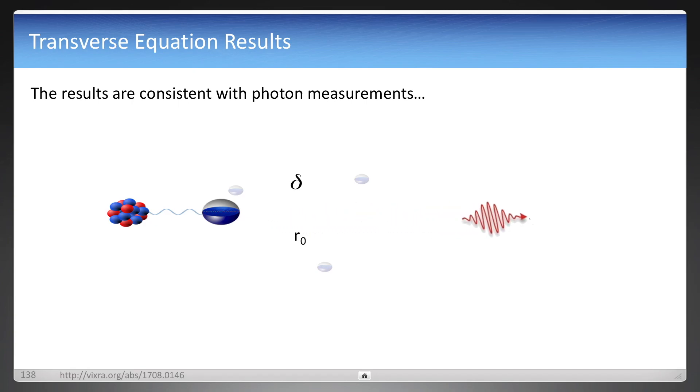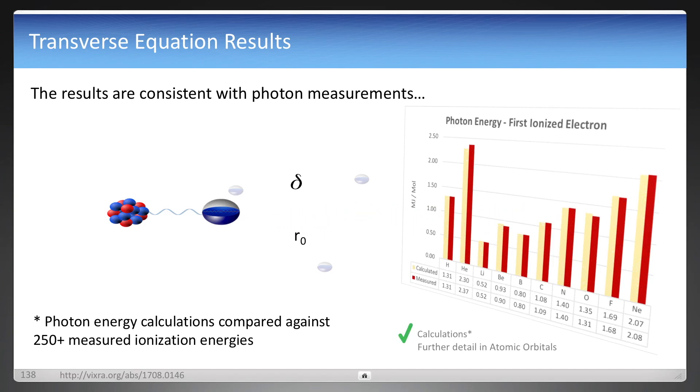And the results from using that equation with these variables is consistent with measured ionization energies. It's actually been compared against 250-plus ionization energies. You can see the URL to the paper there. More information is going to be shared in the video on orbitals.